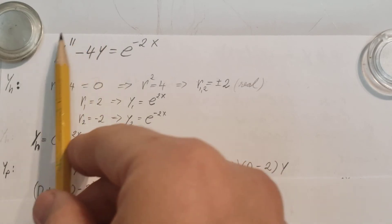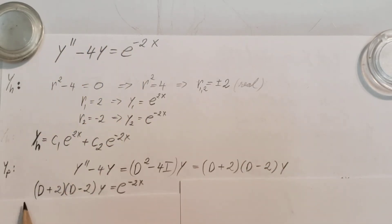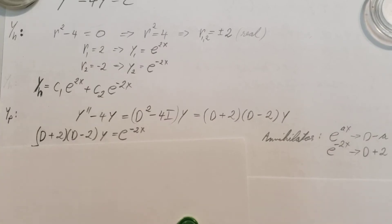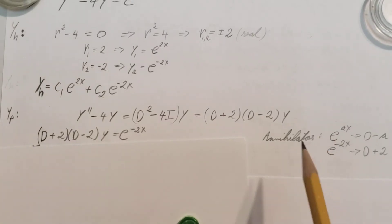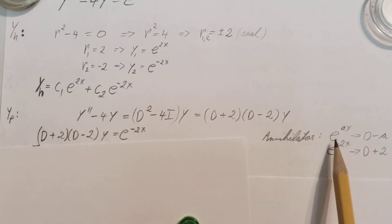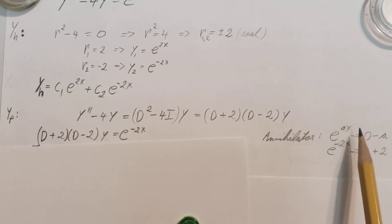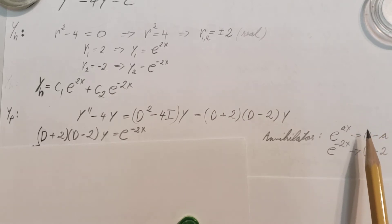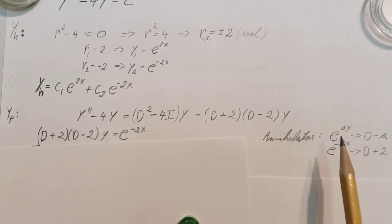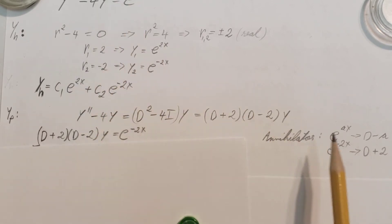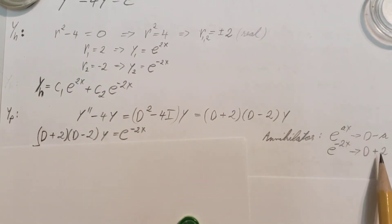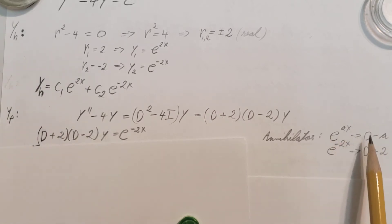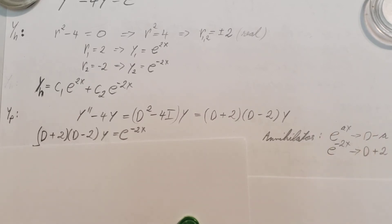Now that I have this, I'm going to rewrite my equation in operator form with what we found. The reason I picked the annihilator method is because I know that e to the ax will have an annihilator of the form D minus a. So e to the negative 2x will have an annihilator of D minus (negative 2), which is D plus 2. That's going to be my annihilator.